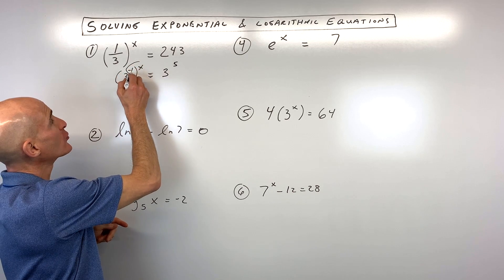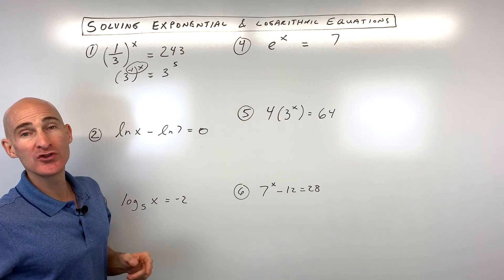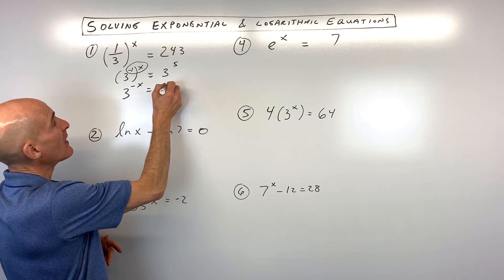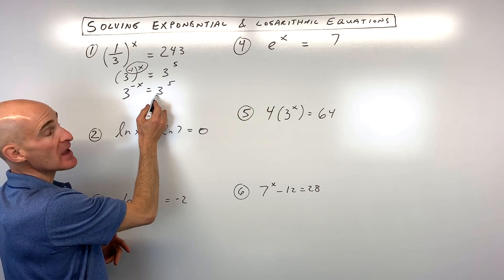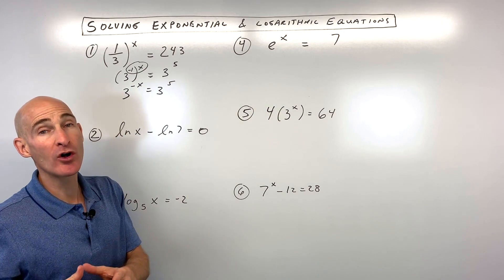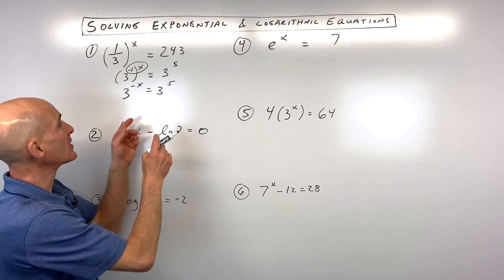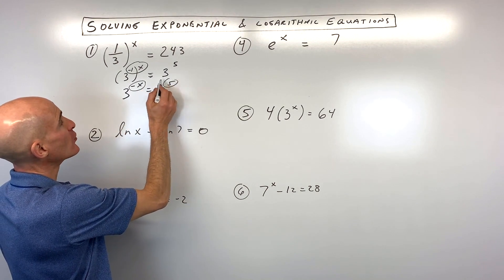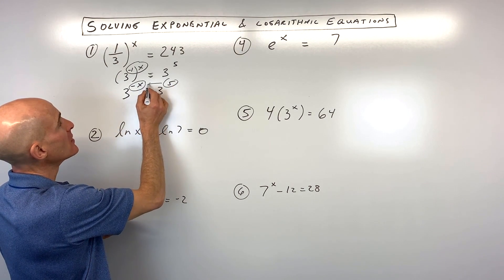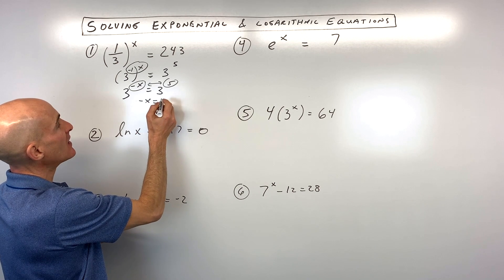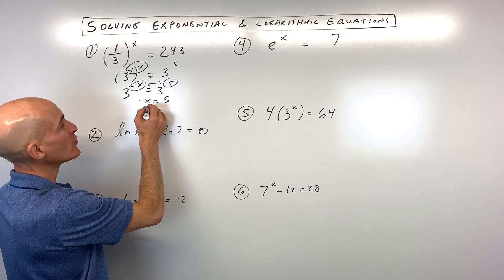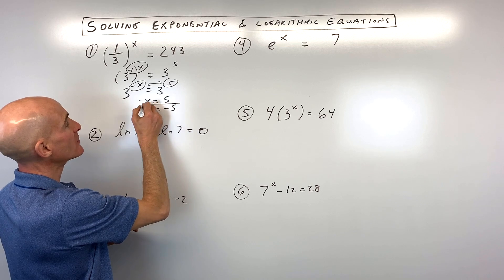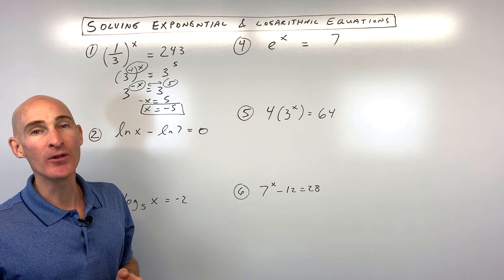Remember, when you have a power to a power, you multiply the exponents, and so now you can see we have the same base. This is called the one-to-one property of exponents — you can just set the exponents equal to one another. So negative x equals 5. Multiply both sides by negative 1, so x equals negative 5, and that's your final result.